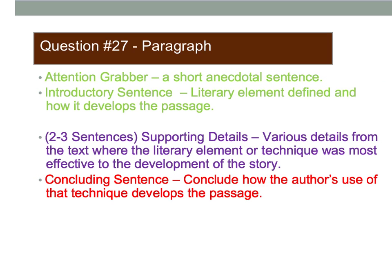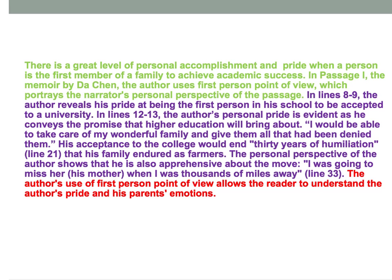Our next major element — and most important — are the supporting details. This should be at least two to three sentences long, probably longer, including various details from the text where the literary element or technique was most effective. Here are my supporting details: 'In lines 8 to 9, the author reveals his pride at being the first person in his school to be accepted to a university. In lines 12 to 13, the author's personal pride is evident as he conveys the promise that higher education will bring about: I would be able to take care of my wonderful family and give them all that had been denied them. His acceptance to the college would end 30 years of humiliation that his family endured as farmers. The personal perspective of the author shows that he is also apprehensive about the move: I was going to miss her — his mother — when I was thousands of miles away. Line 33.'